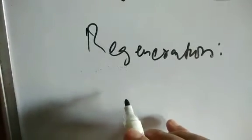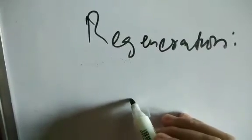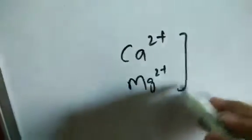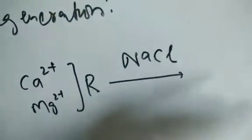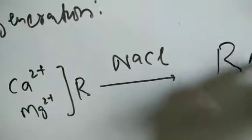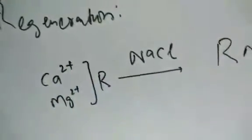We can regenerate the resin to use it again. Regeneration is done by pouring a concentrated solution of sodium chloride over it. So when we pour NaCl over the R–Ca and R–Mg resin, we get the sodium-loaded resin R–SO3Na back, and calcium chloride and magnesium chloride come out. Our resin is regenerated and ready to use again.